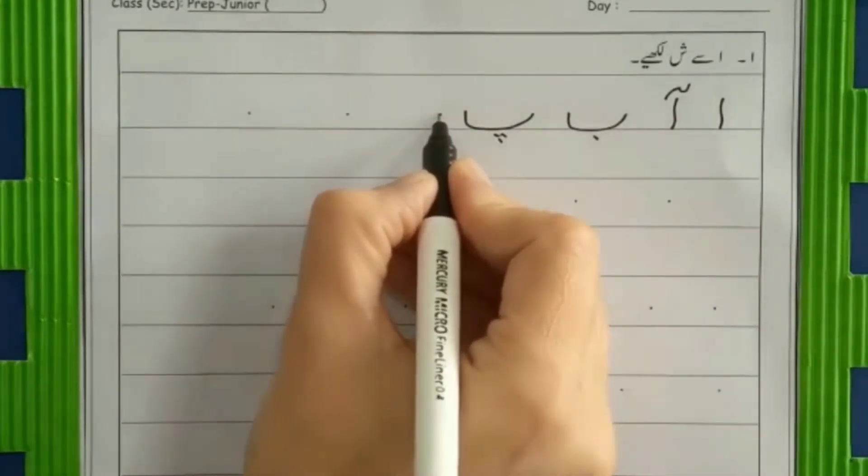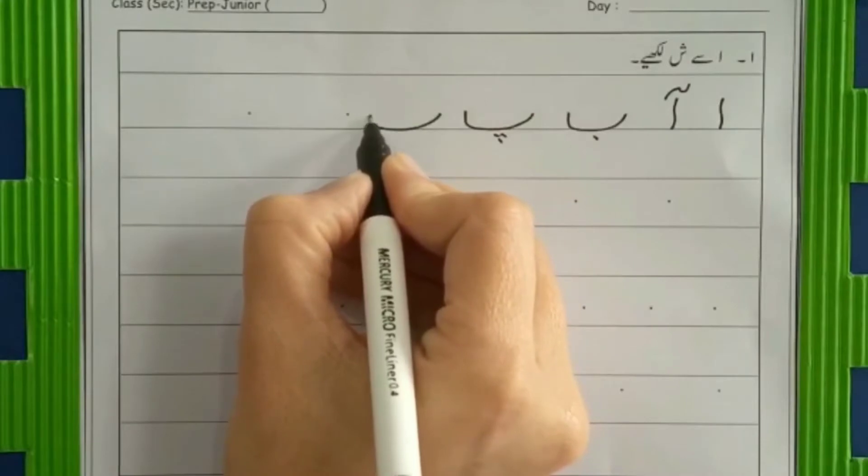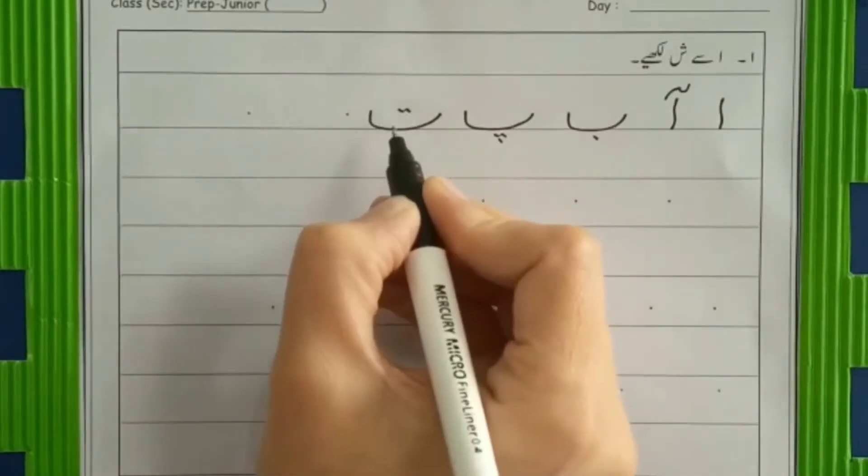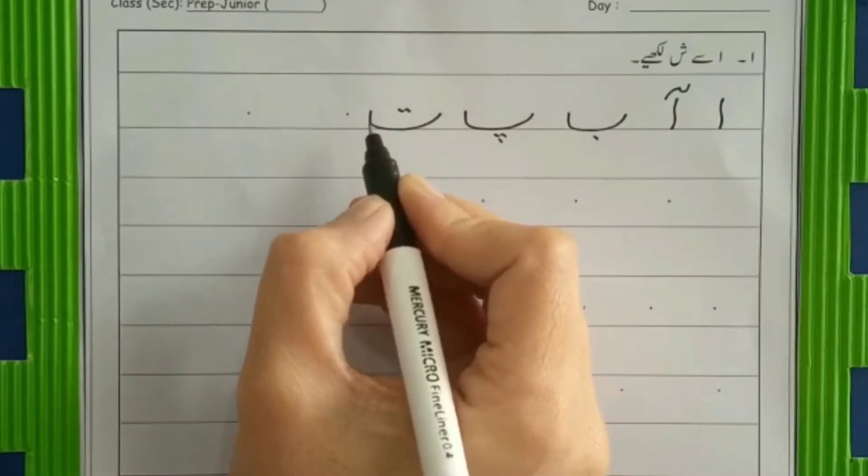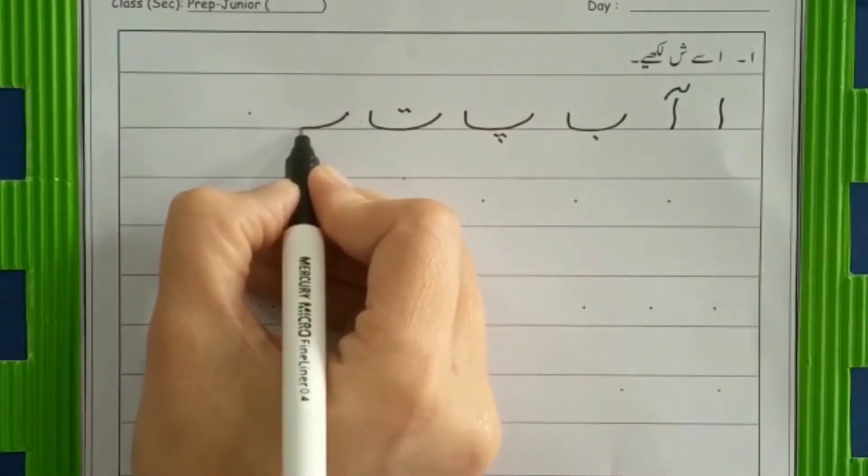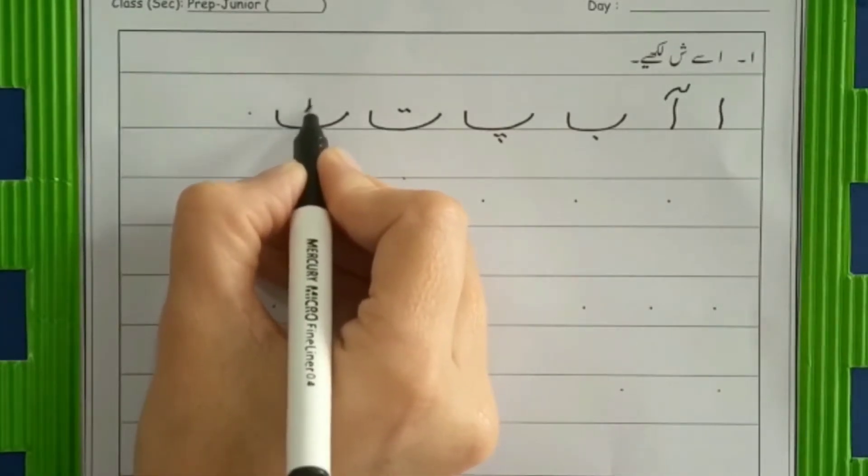Next is te. Come down slant, go on the line, go up straight. And how many dots? Two dots. Be, pe, te, te. Come down slant, go on the line, go up straight and put a topi.